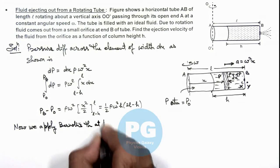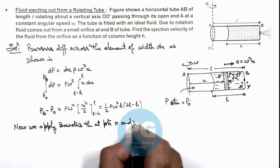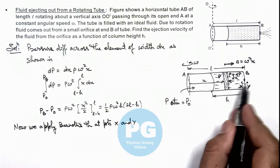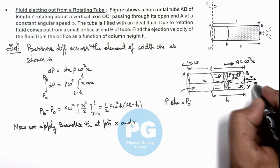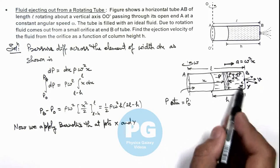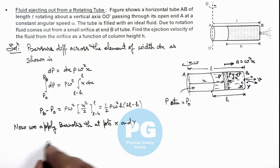at points X and Y which are just inside and outside the orifice B from which the water is ejecting out at a speed v. Then we can write at point X, pressure is P_B.